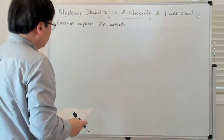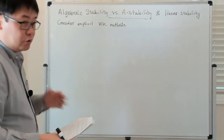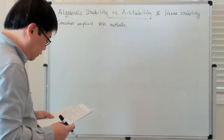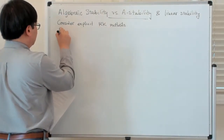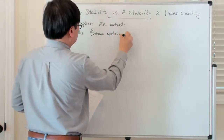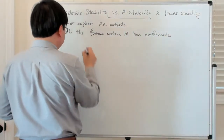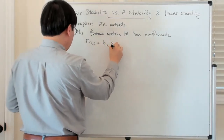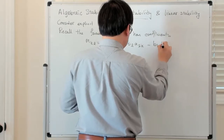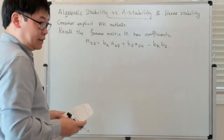If you recall, the issue of algebraic stability has to do with whether or not this special matrix — whose coefficients are constructed from the coefficients of the Runge-Kutta method — whether that matrix is positive semi-definite. So recall that the famous matrix M has coefficients given by M_KL = B_K A_KL + B_L A_LK minus B_K B_L.